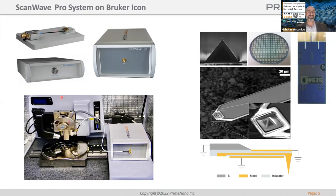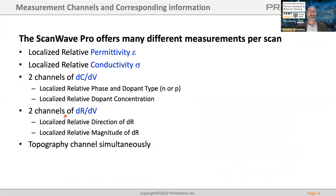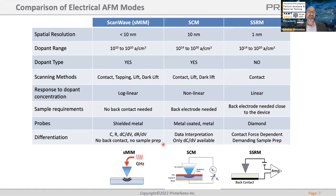This single probe is loaded onto the probe interface module and attached to an AFM system. What we actually measure is relative localized permittivity, conductivity, and with an AC signal we can do dCdV and dRdV. We still get the topography channel, so we get up to six channels of microwave information plus topography. These can be combined any way you'd like or seen individually.